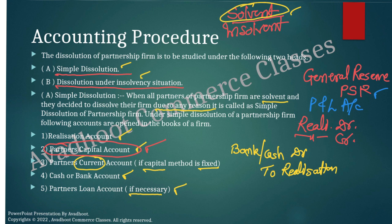Next, liabilities are paid off — creditors, bills payable, bank loan, bank overdraft, and so many liabilities. The entry will be: realization account debit to cash or bank account, because bank or cash is going away. Suppose the problem is silent regarding certain liabilities like creditors or bills payable — nothing given — it is assumed they are paid at book value. You must first check whether realization expenses are paid, then all liabilities.